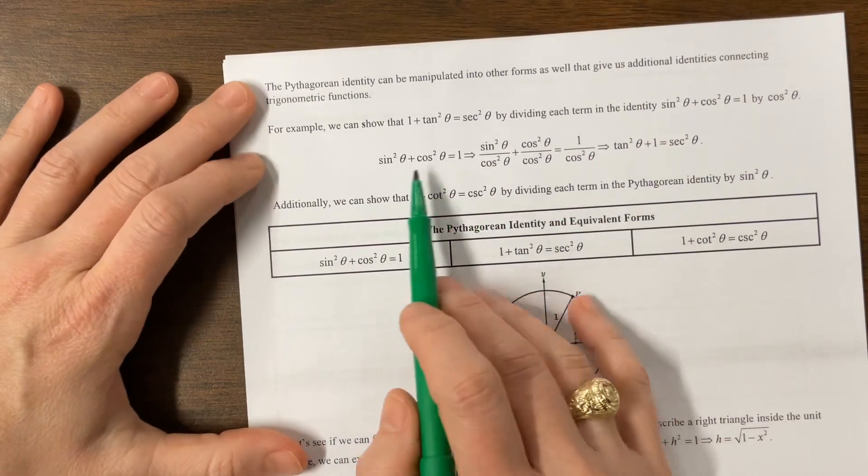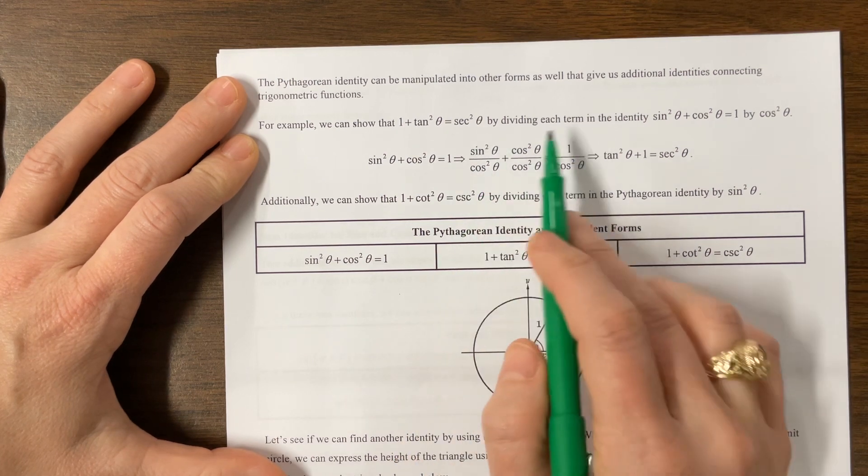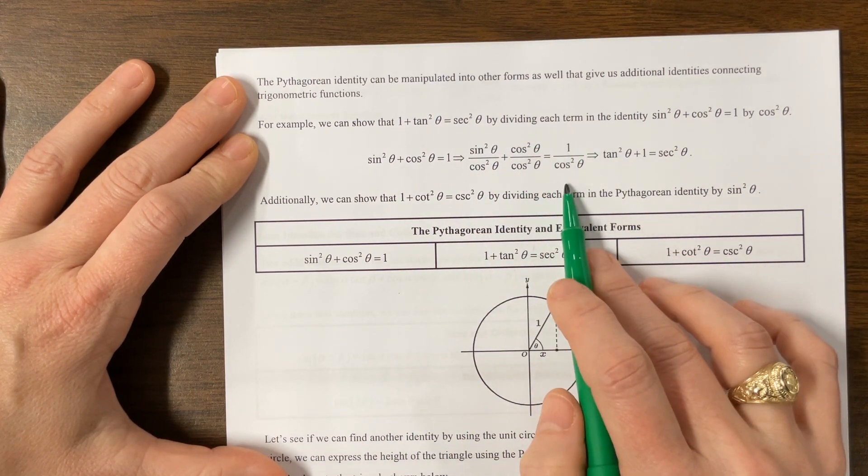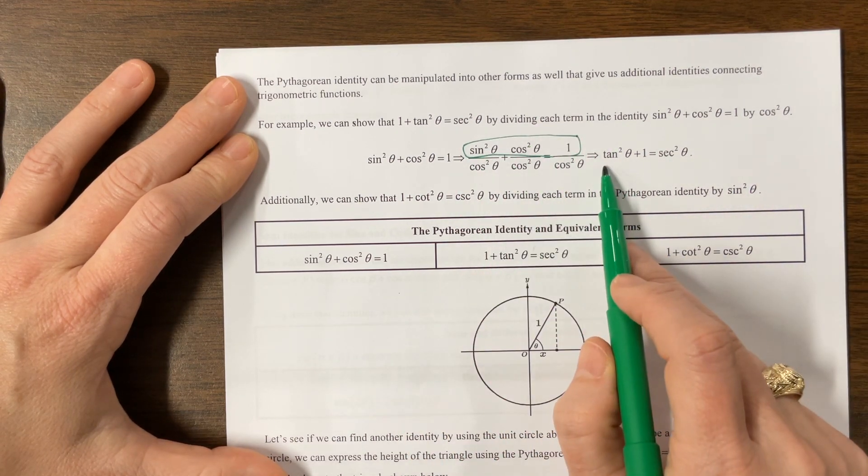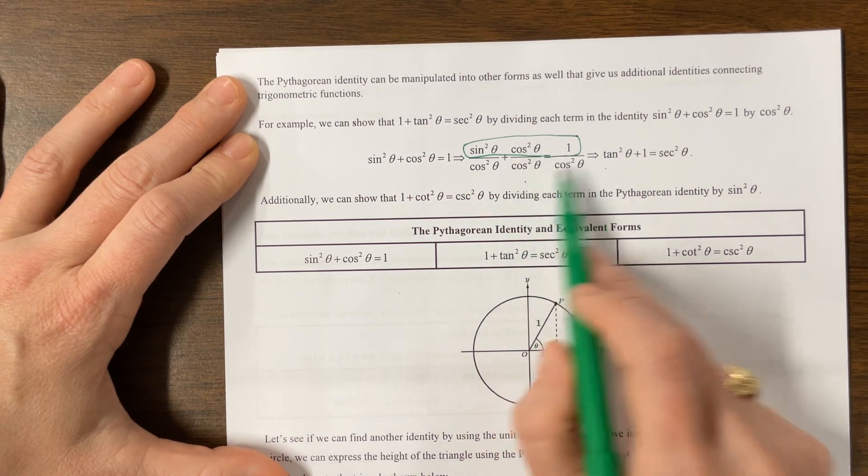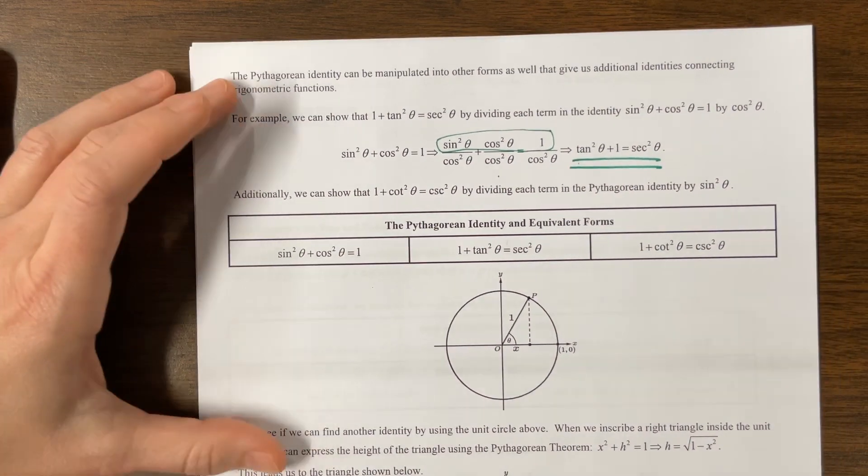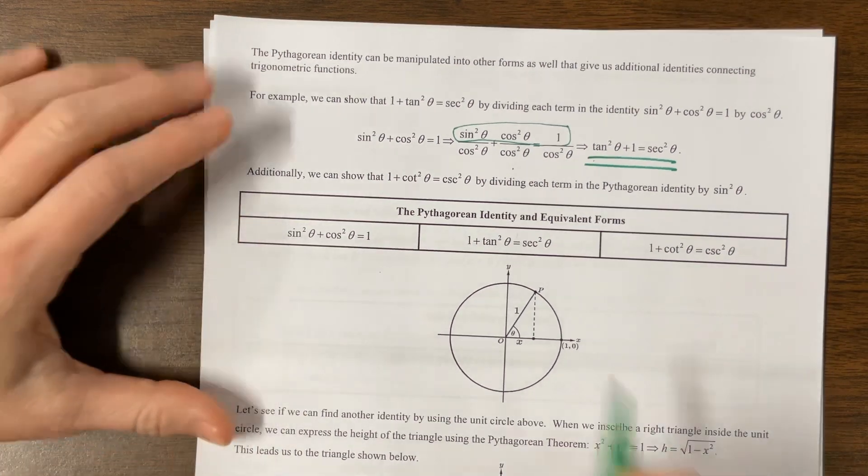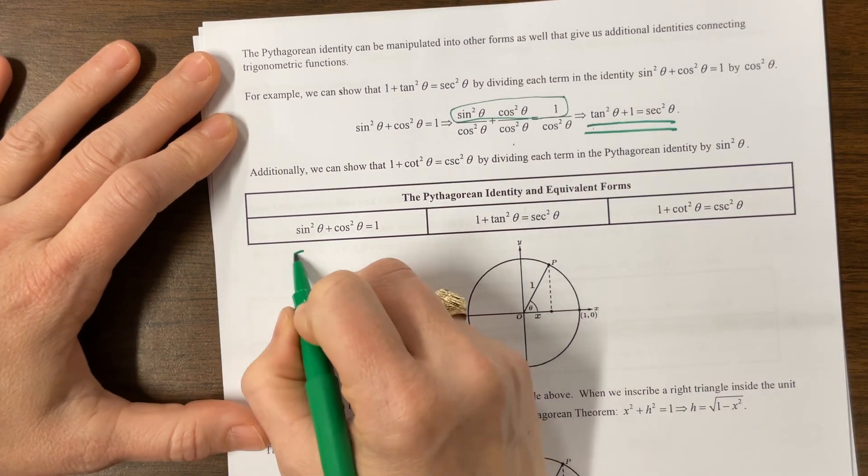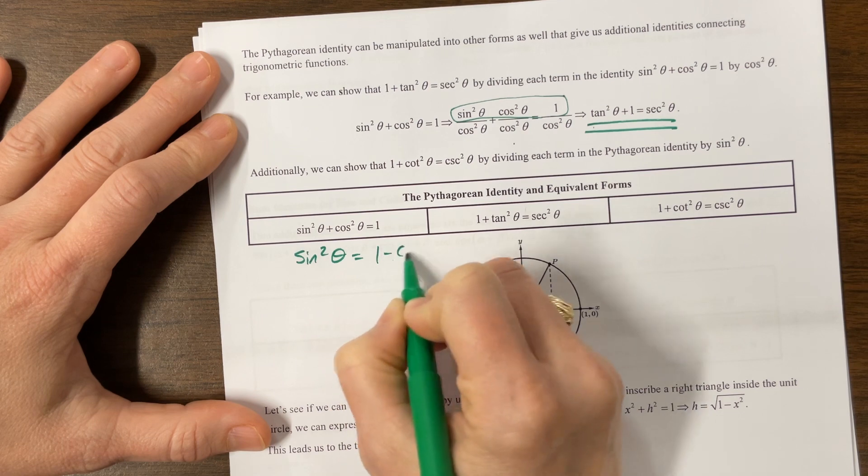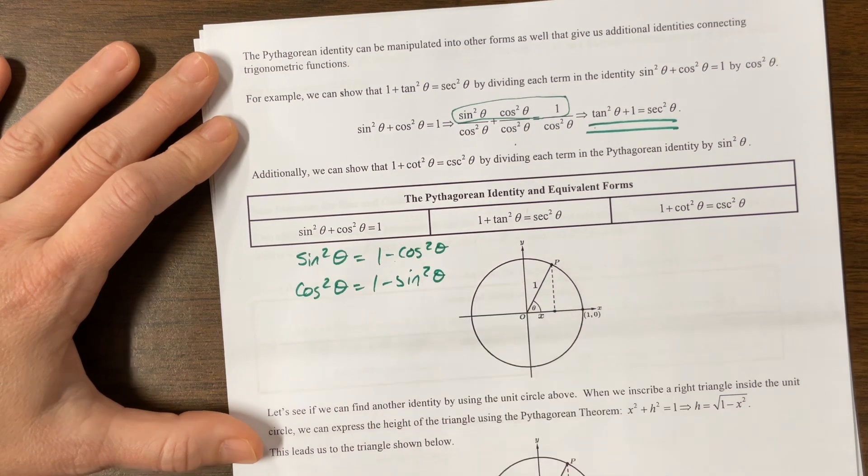And then what we can do is we can take that Pythagorean identity and divide everybody by cosine squared. So I get sine squared over cosine squared, and then cosine squared over cosine squared, and then one over cosine squared. So notice this part right here. There was the big daddy. And then we divide by cosine squared. Well, sine over cosine is tangent. So sine squared over cosine squared is tangent squared. Cosine squared divided by cosine squared is one. One over cosine squared is secant squared. And so this is a second version of the Pythagorean identity. And then we can do the same thing where we divide by sine squared, and it gives us this one right here. I have my kids write out that sine squared is equal to one minus cosine squared, and then write that cosine squared is equal to one minus sine squared, because those things show up a lot.